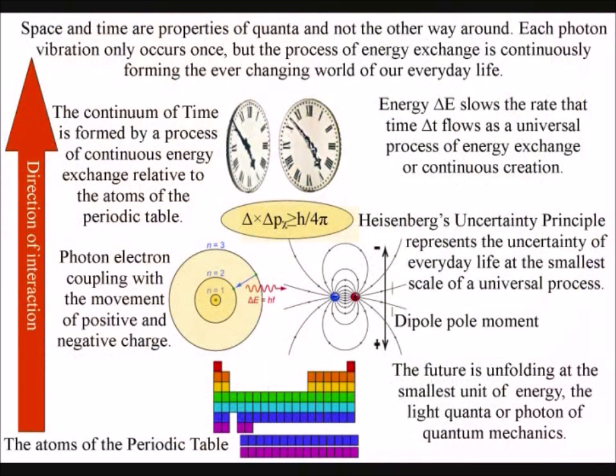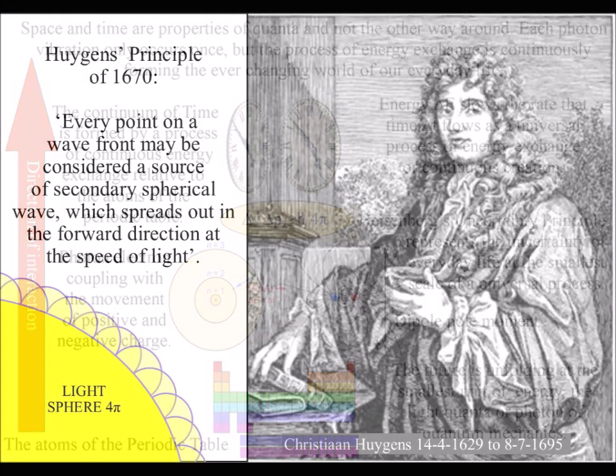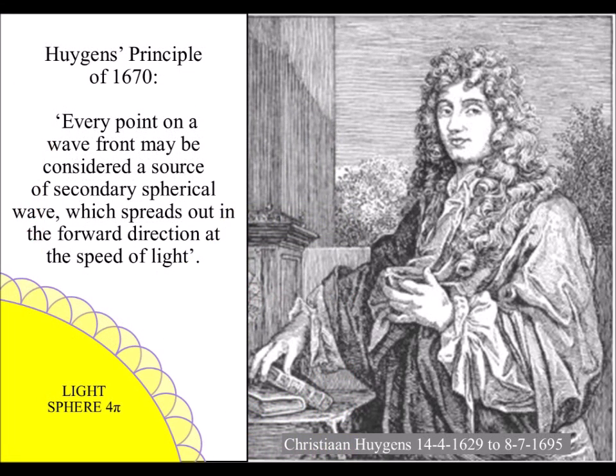This spherical geometry is not my idea, it is based on Huygens' Principle of 1670, that says every point on a wavefront may be considered a source of a secondary spherical wave, which spreads out in the forward direction at the speed of light.